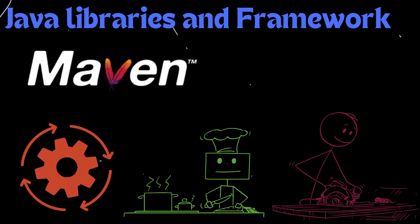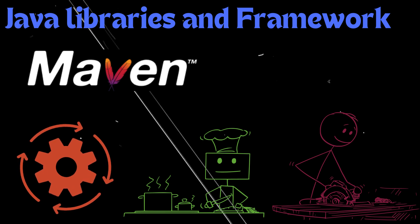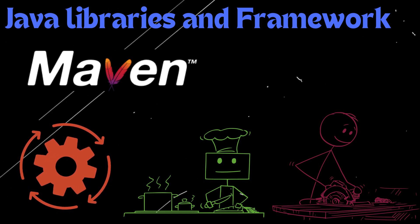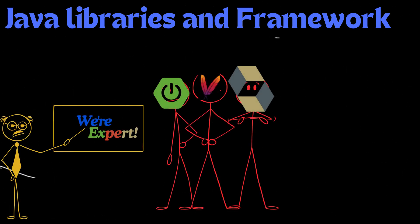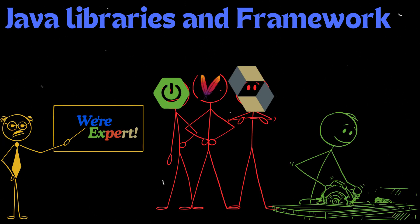Maven, on the other hand, is a build automation tool that simplifies the process of compiling, testing, and packaging your Java code. You don't need to become a guru on all of them, but understanding their basic functionality and being able to set up a basic project using them can significantly impress potential employers. Think of it as demonstrating your willingness to learn and adapt to the ever-evolving world of Java development.